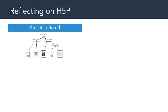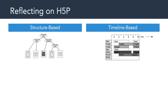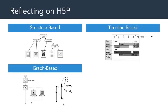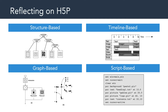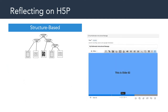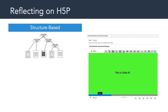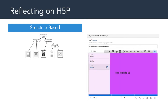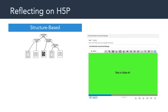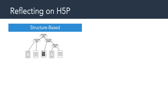Last week we learned about the structure-based paradigm, the timeline-based paradigm, the graph-based paradigm, and the script-based paradigm. H5P is an example of a structure-based paradigm, where authors can simply layer any number of discrete media objects onto a given page or canvas, and then sequence those objects in a particular order. That's an example of the structure-based paradigm.